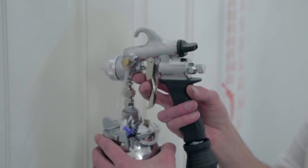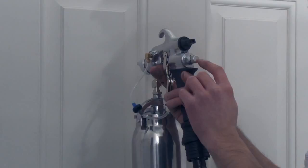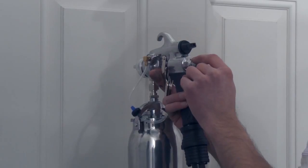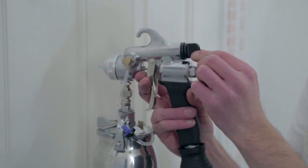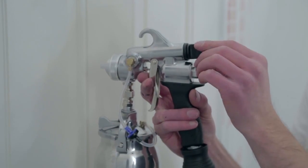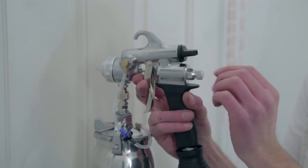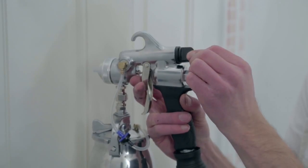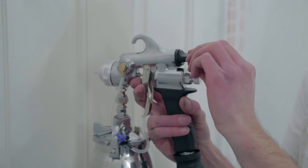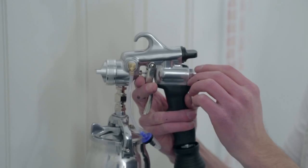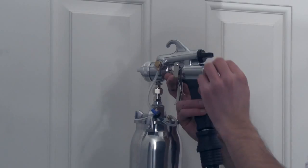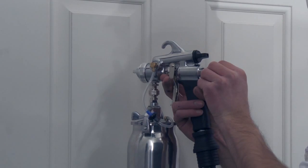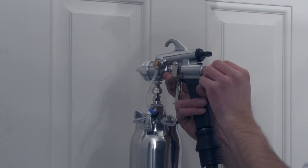At the back of the spray gun are two adjustment knobs. The top knob is the pattern adjustment knob. When in vertical position, it will give a wide spray pattern of around 10 to 15 cm, or 4 to 6 inches. And when set in the horizontal position, it will give a narrow round spray pattern of around 2 cm, or 1 inch. The adjustment knob can also be set anywhere in between to give a perfect size spray pattern for the component being sprayed.